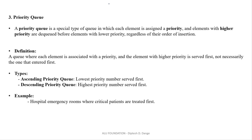Now let's move forward to the priority Queue. As the name suggests — priority मतलब क्या होता है — यह special type का Queue होता है, और हर एक element के लिए priority assign होती है। Higher priority हो सकती है, lower priority हो सकती है। A priority Queue is a special type of Queue in which each element is assigned a priority, and elements with higher priority are dequeued before elements with lower priority। अगर आप higher priority order use कर रहे हो, तो जिसके पास higher priority है, वो पहले remove हो जाएगा queue से।